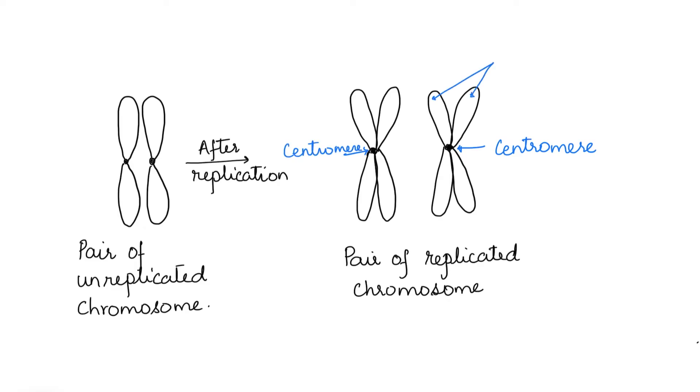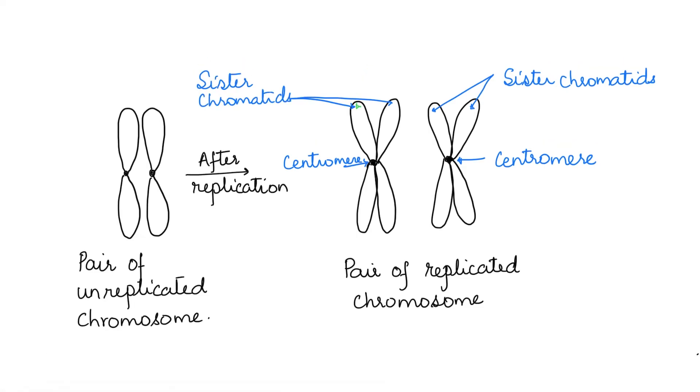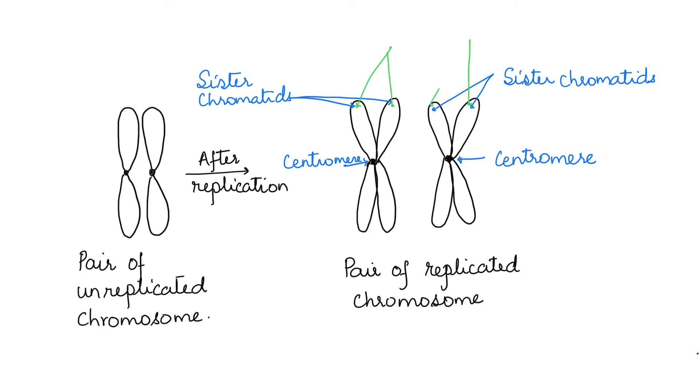The strands connected by the same centromere are called sister chromatids. Since there are two chromosomes, the two sister chromatids of different chromosomes are called non-sister chromatids. That means the chromatids that are not connected by a centromere are called non-sister chromatids.